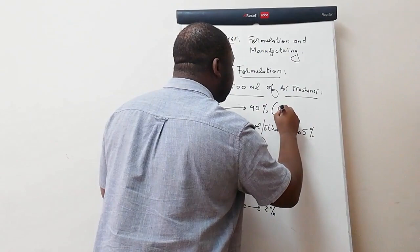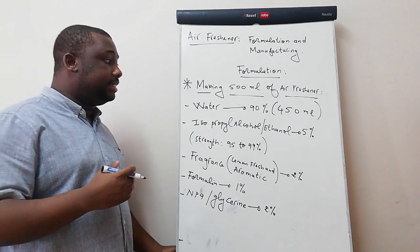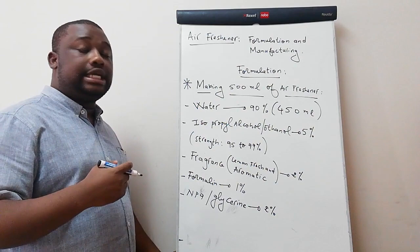The next ingredient is our alcohol, which should be five percent of the total volume. Five percent of 500 mils is 25 mils.